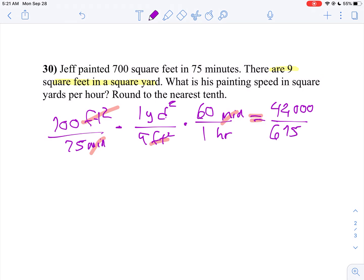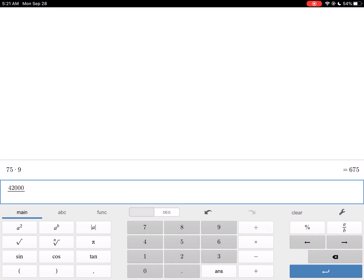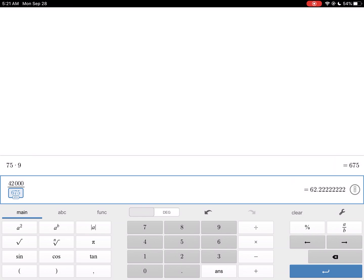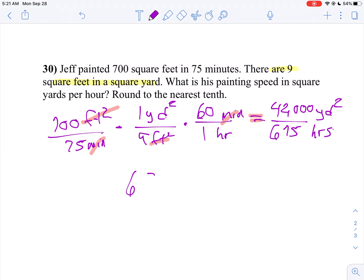So he painted 42,000 square yards in 675 hours. Well, we usually don't want that. We want to divide it out and we'll round our answer to the nearest tenth. So now we're going to take 42,000 divided by 675, which is 62.2 square yards per hour. And there's your answer for that.